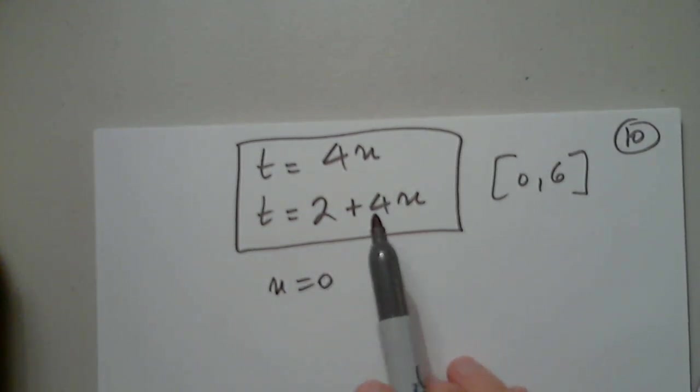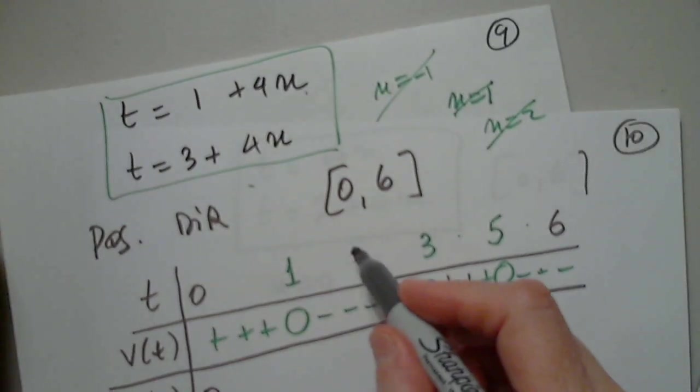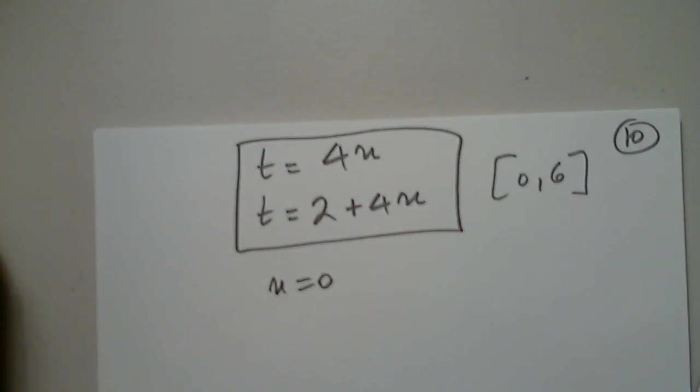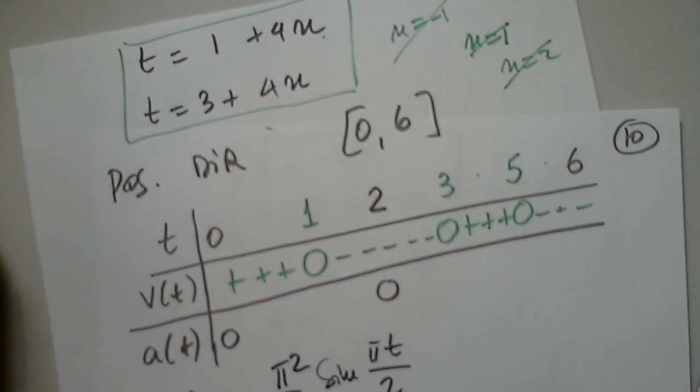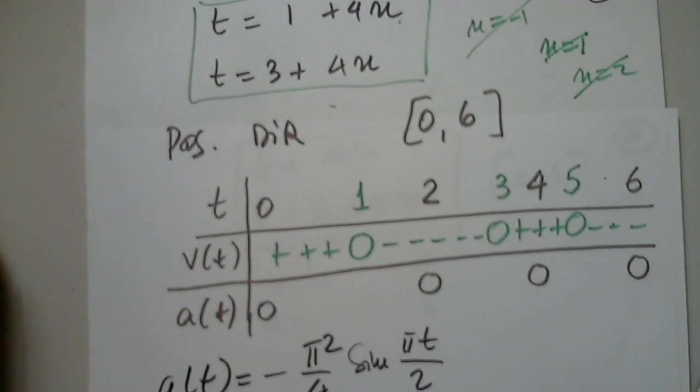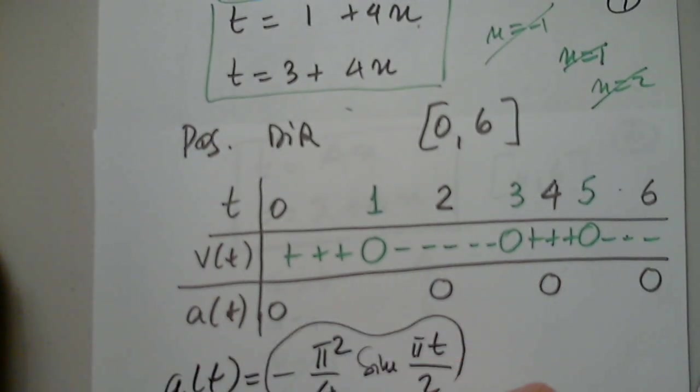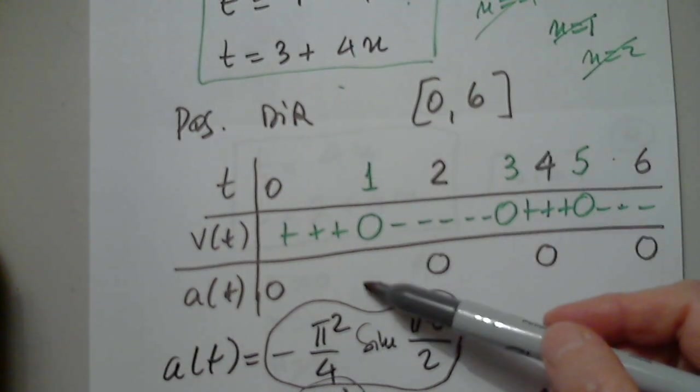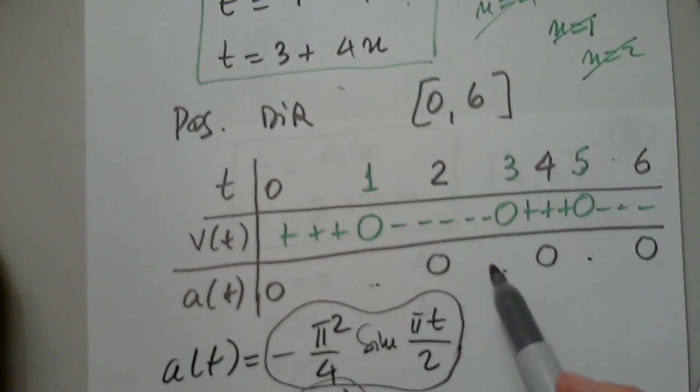So this is 0 and 4 N, so this is T. This is 2 plus 4 N. And I'm assuming they want the same thing on 0 to 6. It's not specifying but I would assume. When N is 0, we have 0 and we have 2. When N is 1, we have 4 and 6. When N is negative 1, not good. When N is 2, too much.